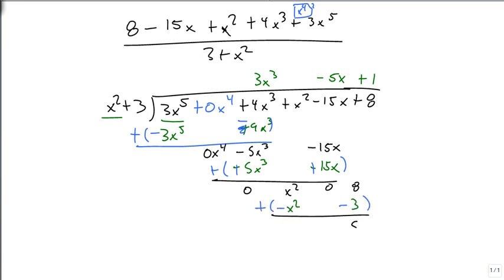Giving us 0 and 5. And so my result is 3x cubed minus 5x plus 1 plus 5 over x squared plus 3. And we've now done long division with an x squared and with reverse order.